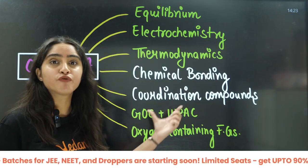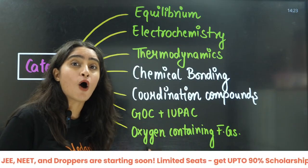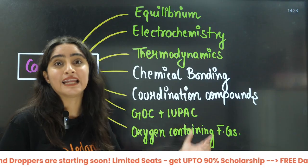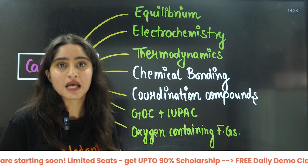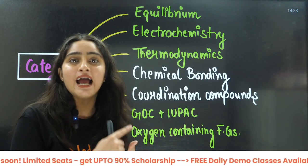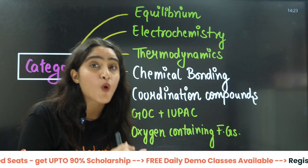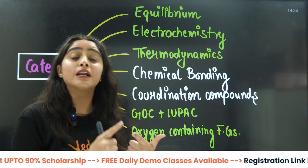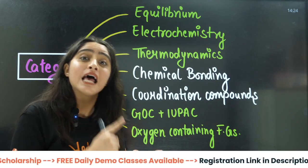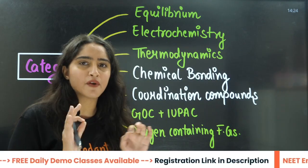After that, you should focus on oxygen-containing functional groups — that are aldehyde, ketone, carboxylic acid, alcohol, phenols and ethers. These are very, very important and fall in category A.